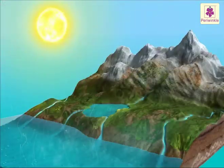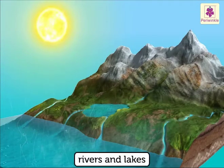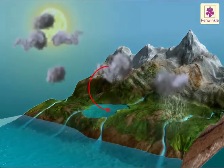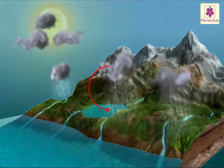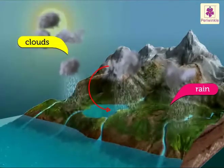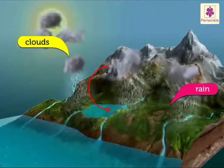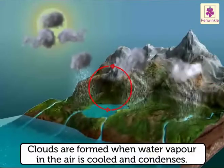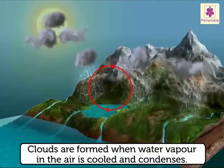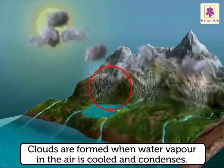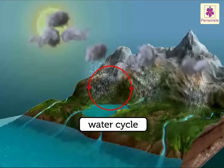We get water from the rivers and lakes. The rivers and lakes get water from the rain. The rain comes from the clouds. Clouds are formed when water vapour in the air is cooled and condenses. This is a part of the water cycle.